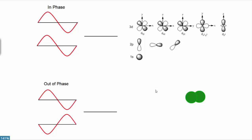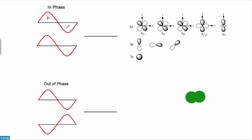Before we go too deep into what those wave functions are, let's talk about something you're probably well familiar with already: your two-dimensional wave functions, like your typical sine function. Your sine function takes on positive values from 0 to π, and negative values from π to 2π, and right at π it has a value of 0. Any multiple of π thereof — we call that point where the wave function takes on a value of 0 a node. That'll be important later.